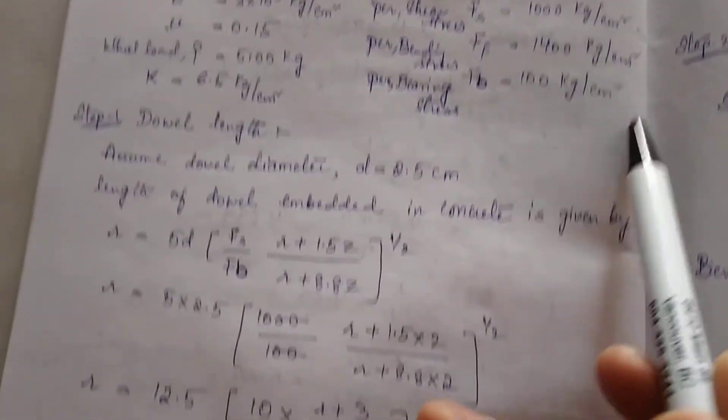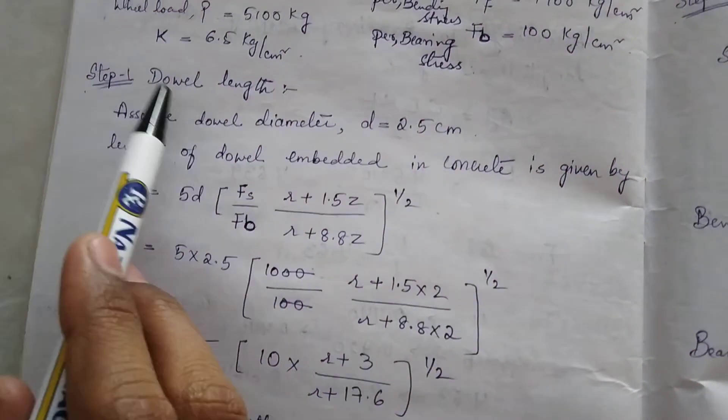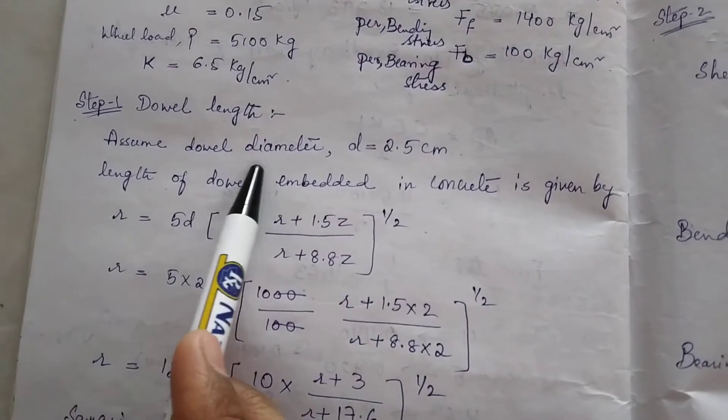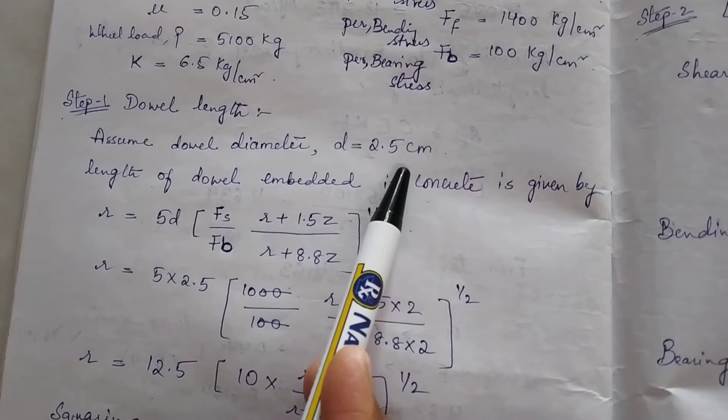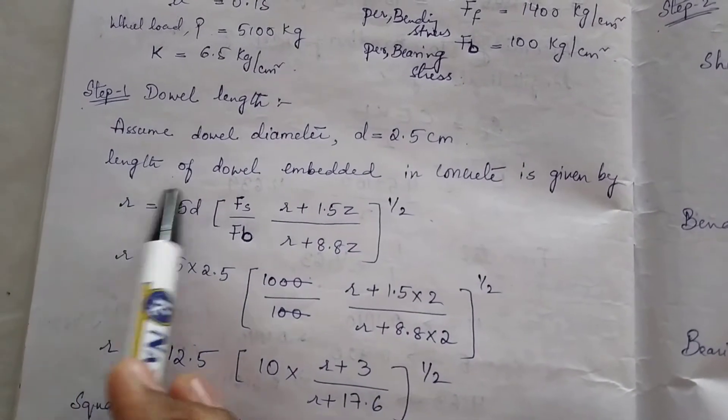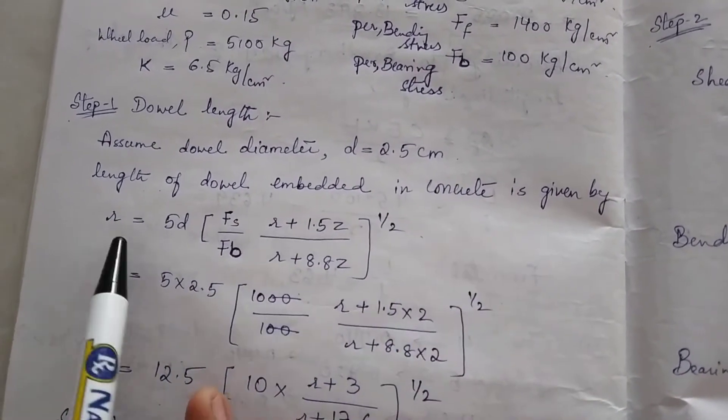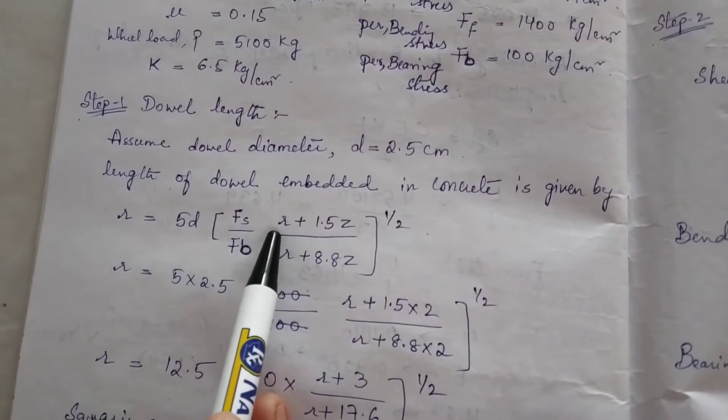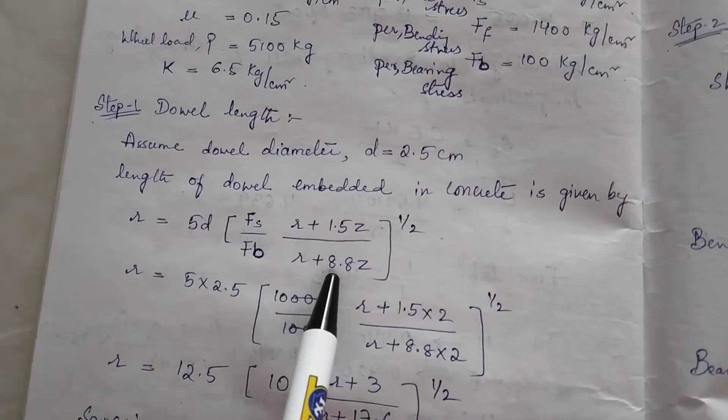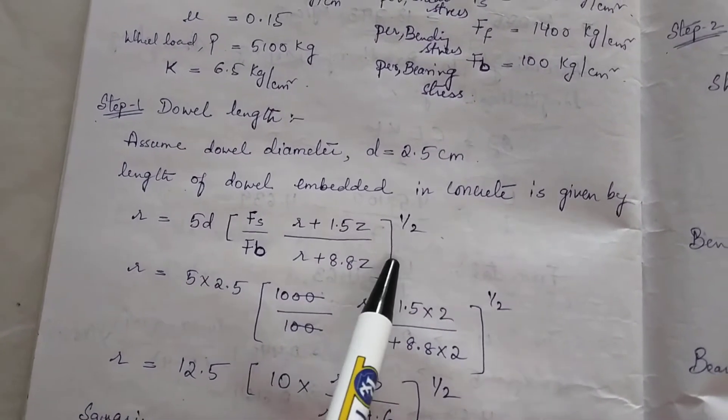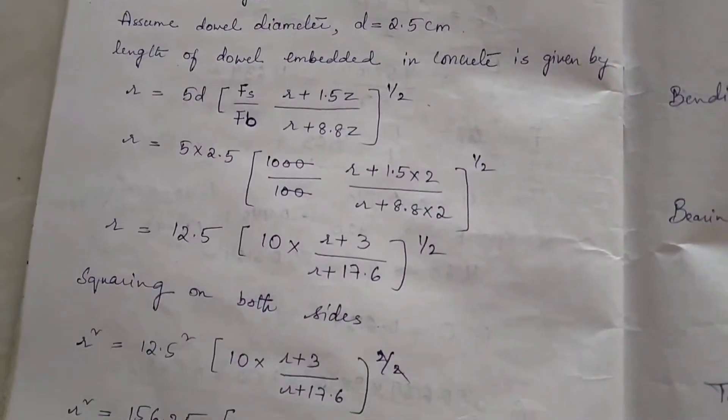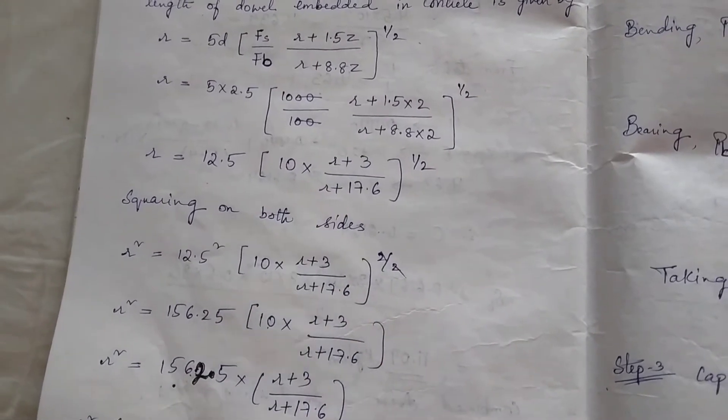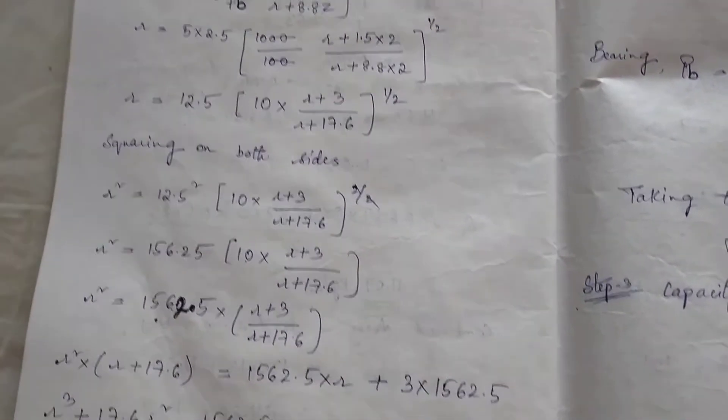Step 1: Calculate dowel length. Assume dowel diameter D = 2.5 centimeters. The length of dowel embedded in concrete is given by the formula: r = 5d×Fs / [Fb×(r + 1.5Z)] / (r + 8.8Z)^(1/2). By solving it mathematically, we will get the value for r.